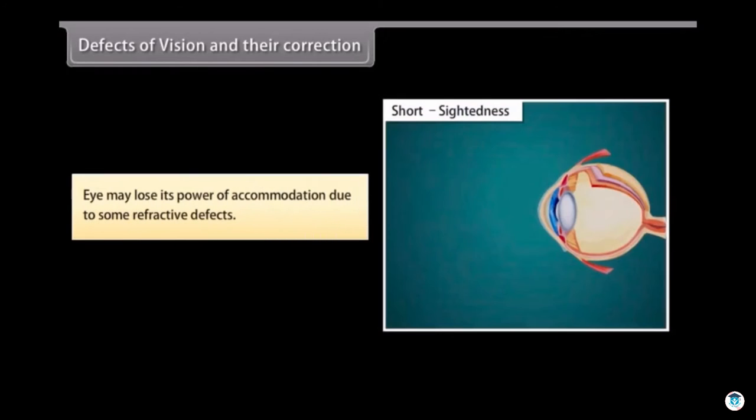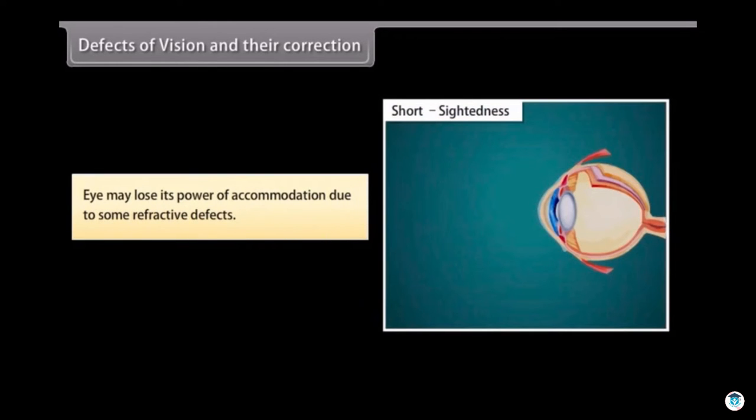Eye may lose its power of accommodation due to some refractive defects. There are three such defects.